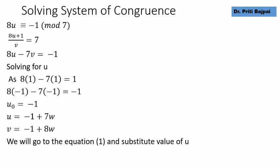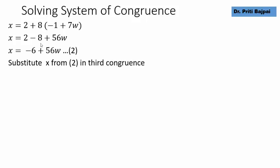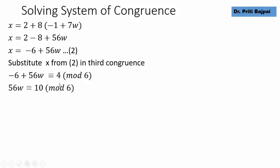Substituting U = −1 + 7W into equation 1 gives X = 2 + 8(−1 + 7W) = −6 + 56W — call this equation 2. Now we substitute this X into the third congruence X ≡ 4 mod 6. One by one we are involving all congruences; so far we used two, now we move to the third.